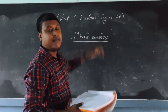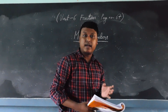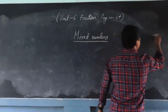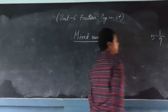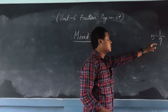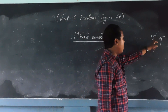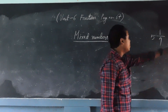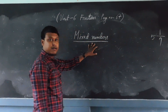Mixed numbers are a combination of a whole number and a fraction. For example, 5 and 1/4. You see here — it is a combination of a whole number and a fraction together. This all together is known as a mixed number.